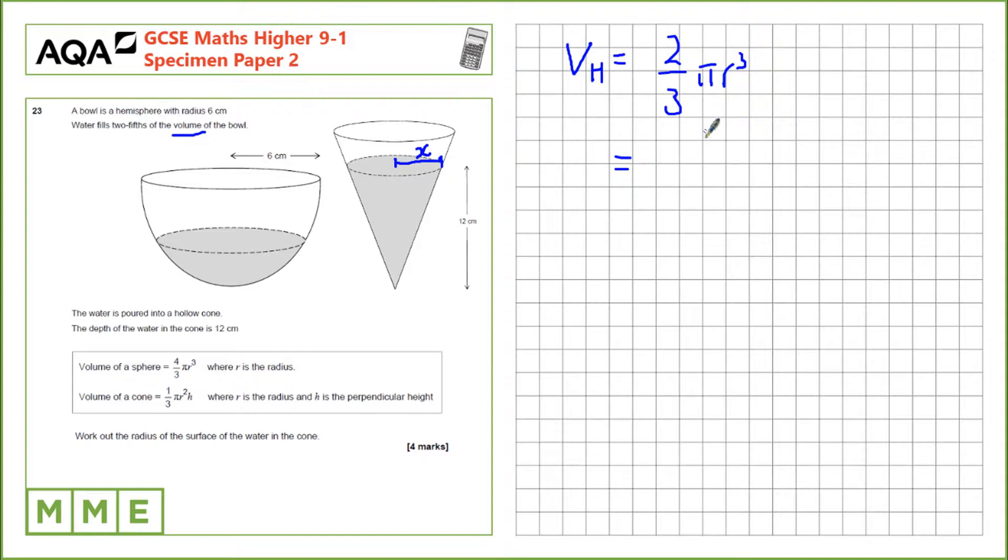We know the radius is 6, so we can do 2 thirds times pi times 6 cubed, which equals 144 pi. We leave this in terms of pi for now, since it will make our calculations more accurate later on.